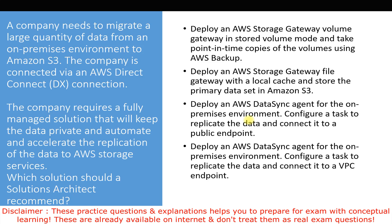Storage Gateway does not accelerate data replication, which is a stated requirement. So options one and two — both Storage Gateway — are out of scope. With the public endpoint also eliminated, the correct answer is option four: deploy an AWS DataSync agent for the on-premises environment, configure a task to replicate the data, and connect it to a VPC endpoint. This keeps data private over Direct Connect and accelerates replication.